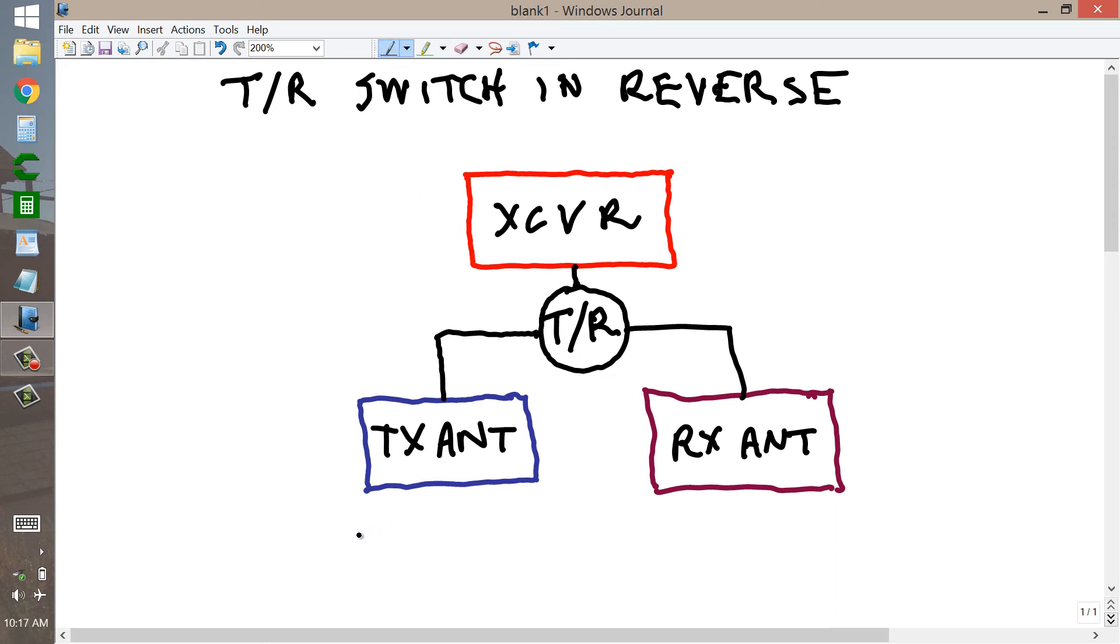So this might be, say, a vertical. Verticals seem to be the worst at receiving noise. But when you're transmitting, that's of no consequence. What matters when you transmit is that the signal get out. What matters when you receive is that the signal get in. So you might have a tuned ferrite core solenoidal loop stick antenna here and your transceiver here.